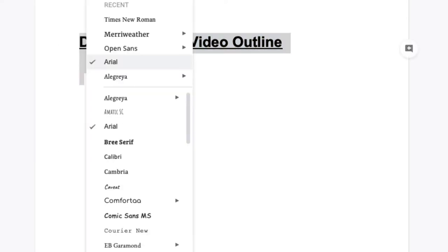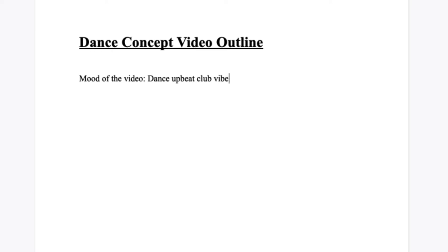Some things that are important to add to your outline are the mood of your video, song, set location, dancers, extras, wardrobe, and makeup. Also start trying to figure out what equipment you're going to use because that's obviously super important, and add a note section for future notes that you might have.